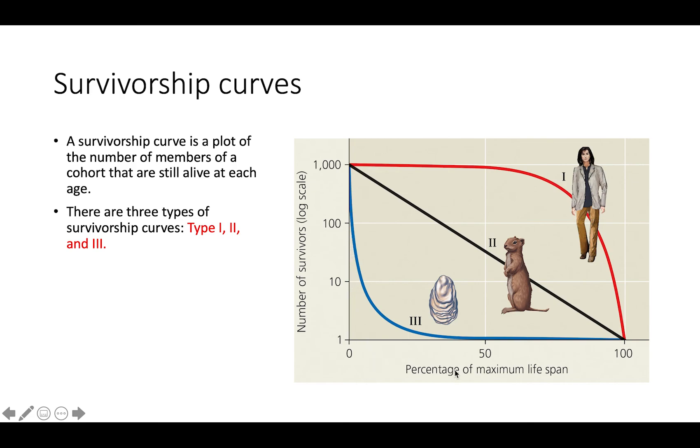Lastly, we have Type III organisms. For Type III organisms, the majority don't make it very far into their lifespan. As you approach the maximum lifespan, we see a really sharp decrease in the number of individuals that are actually able to survive to that age.